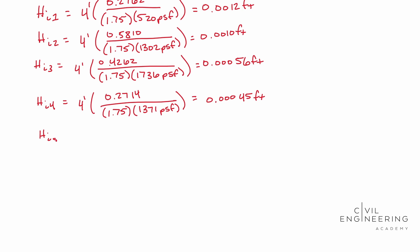All right. And our last layer, H_I5, this guy's going to be equal to six foot in our layer thickness, times 0.0392 over 1.75 our shape factor again, times our elastic modulus, 2083 pounds per square foot. All right. And when you solve that out, you should end up with 0.000065 feet. All right. Did you get all those answers? We're going to add that up. So when you sum all these guys up, you should end up with 0.00327 foot or close to it.